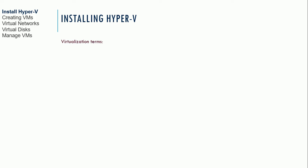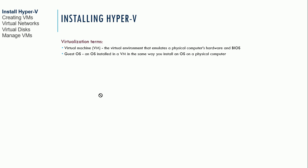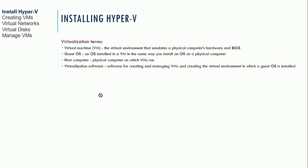Before we talk about how to install Hyper-V, let's talk about some of the vernacular with Hyper-V, or with virtualization in general. A virtual machine is the virtual environment that enables a physical computer hardware and BIOS — basically it allows us to run a machine within our machine. The guest operating system is the machine running virtually within a host operating system. Virtualization software is the software for creating and managing our VMs — for example, Hyper-V.